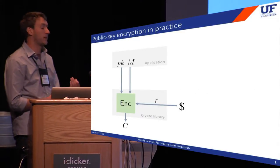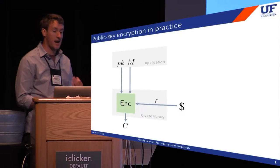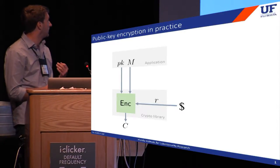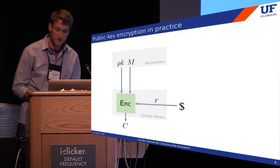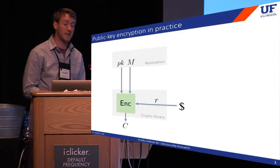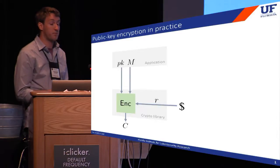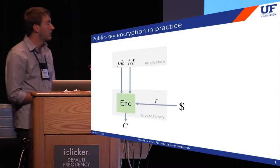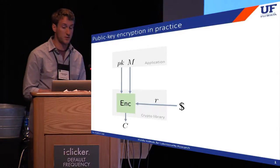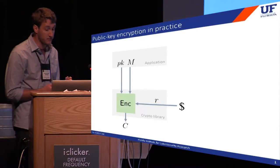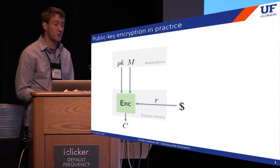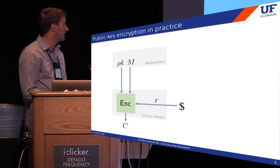Syntactically, we think of public key encryption as taking in a message and a public key and randomly outputting a ciphertext. In practice, applications make use of PKE by invoking a library such as OpenSSL. It's convenient to assume that the library has access to a source of uniform random coins, and this assumption of uniformity underpins our traditional notions of security such as IND-CPA.